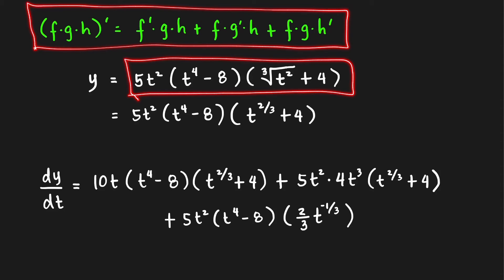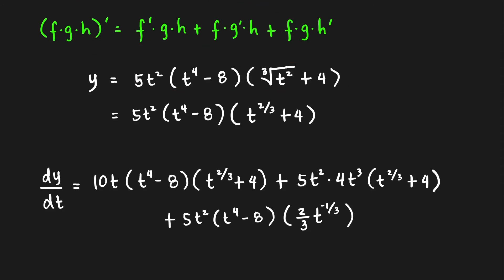It is a sum of three products, where in each product you only take the derivative of one factor. To take the derivative of the cube root term, first write it into rational exponents — that is t^(2/3), where the index goes to the denominator.